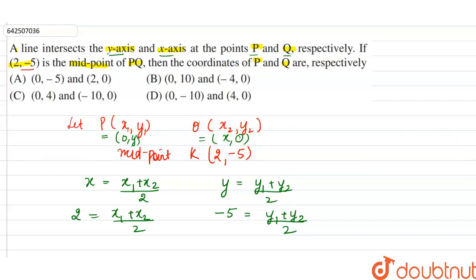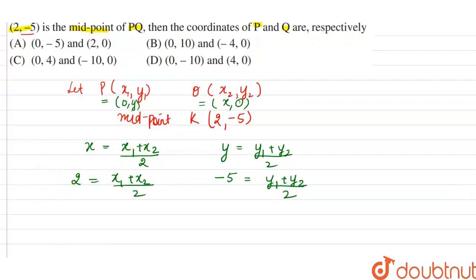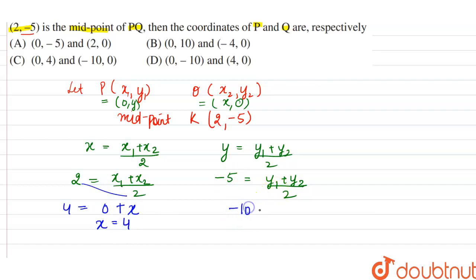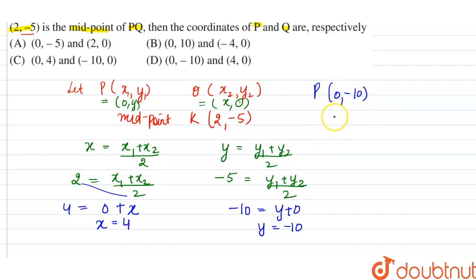Substituting into the midpoint equations: 2 × 2 = 4, so 4 = x1 + x2 = 0 + x, giving x = 4. Similarly, -5 × 2 = -10, so -10 = y1 + y2 = y + 0, giving y = -10. Therefore, the coordinates of P are (0, -10) and the coordinates of Q are (4, 0).